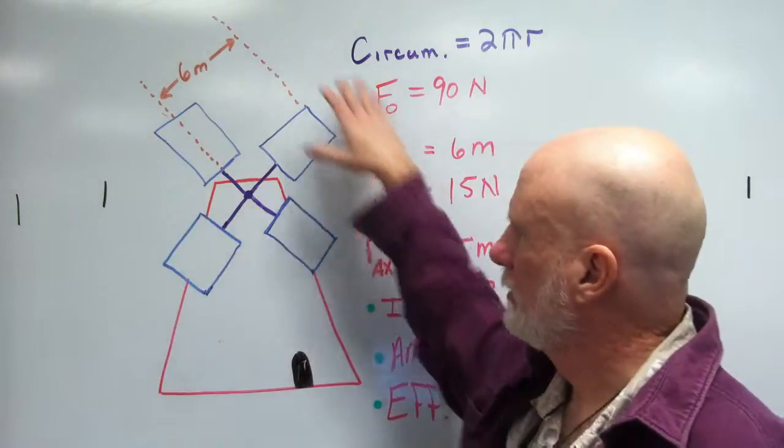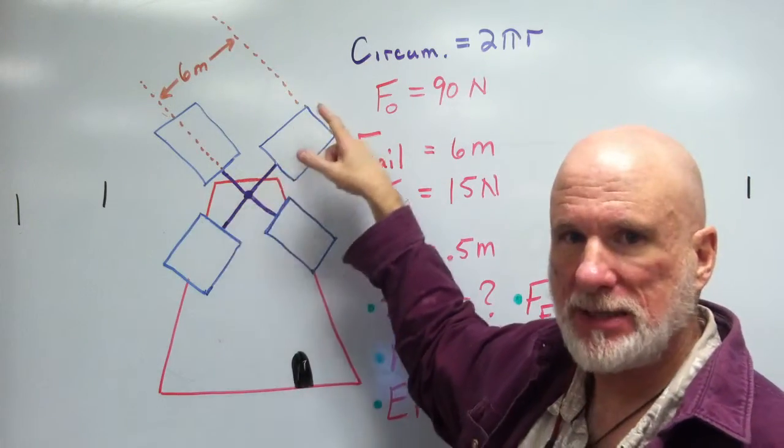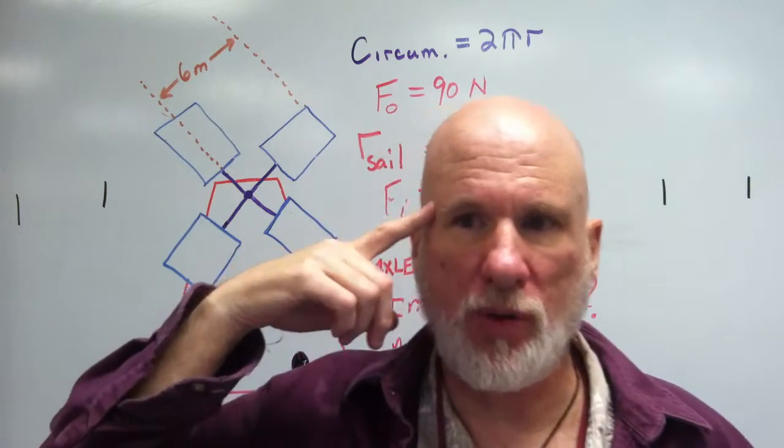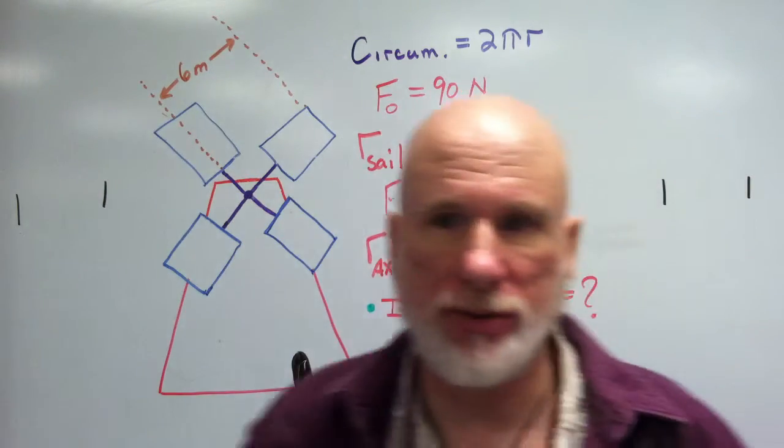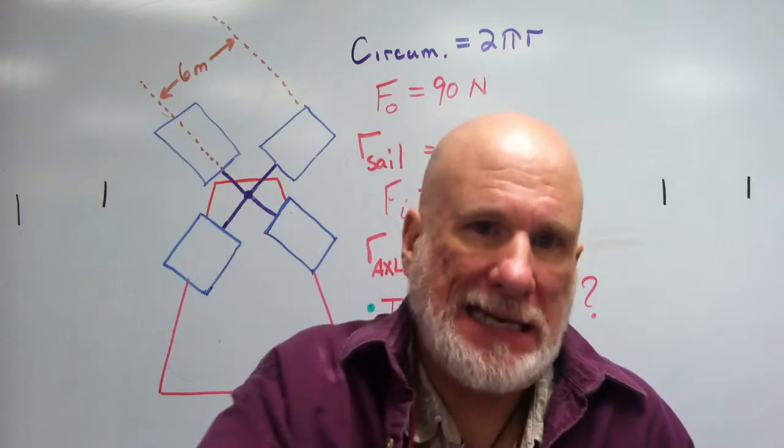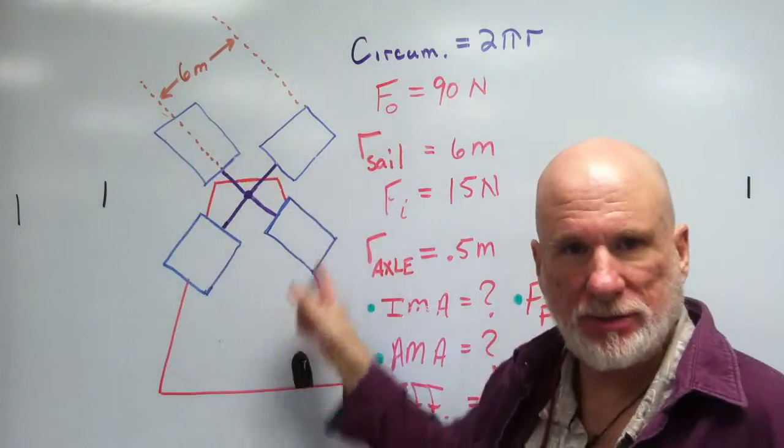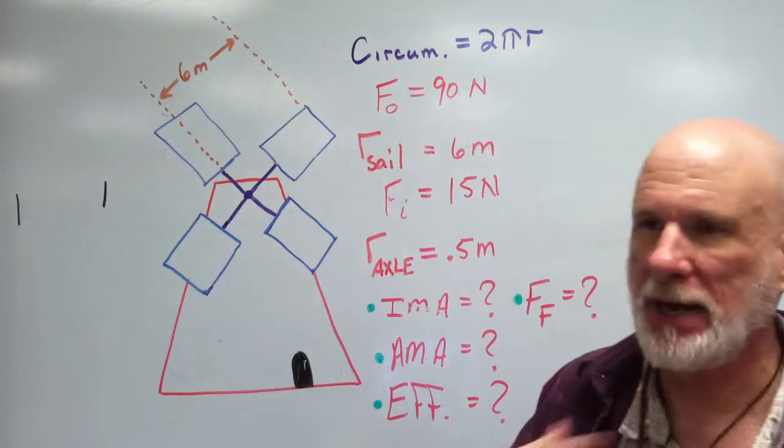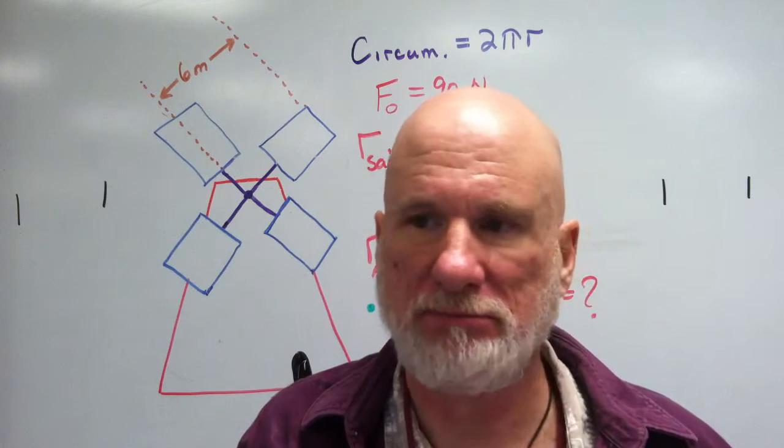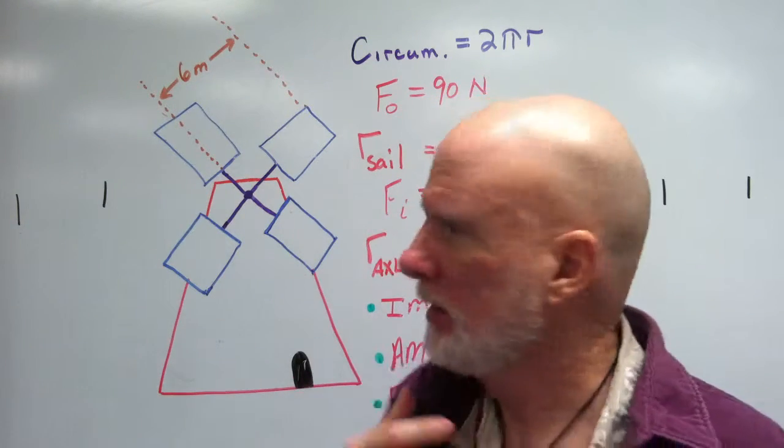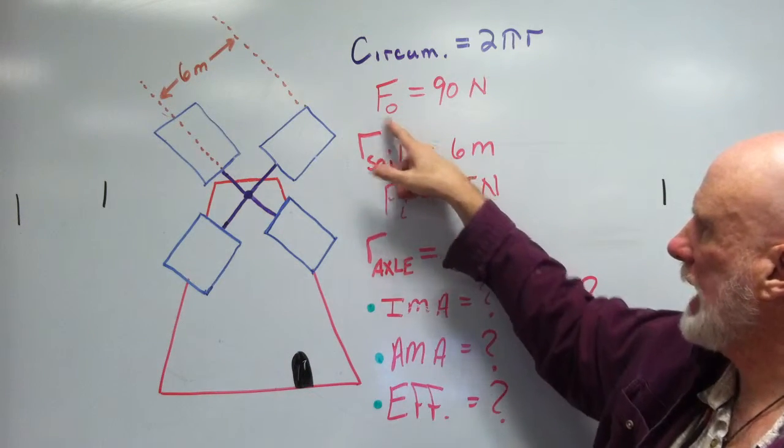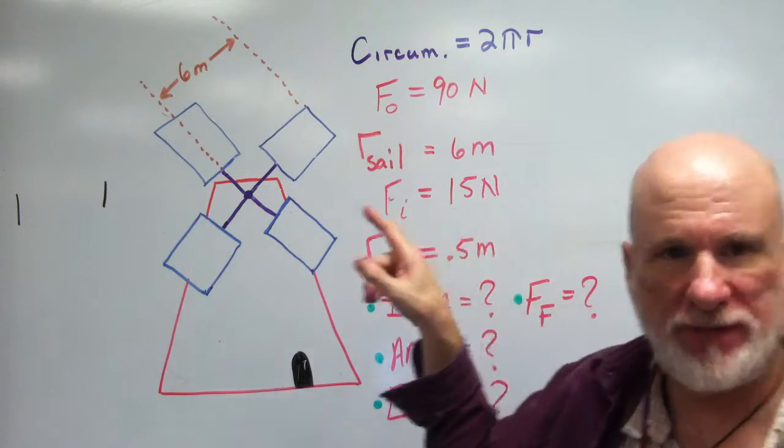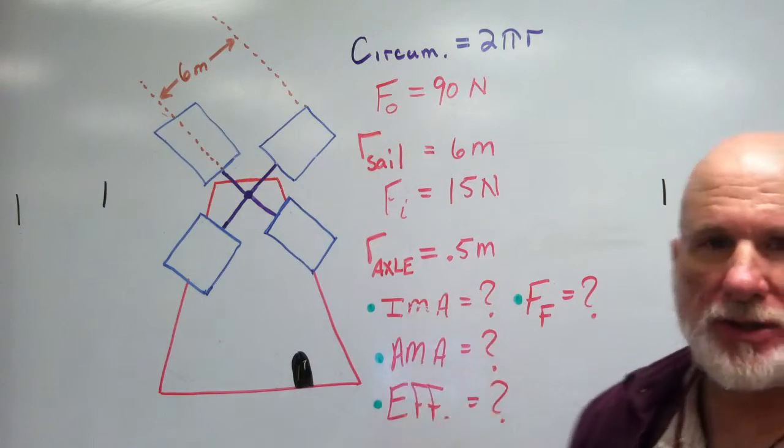I have sails, 6 meter radius, 6 meter radius. The output force is going to be 90 newtons. That's what I'm actually going to do to grind. Grind, 90 newtons. Okay? The input force on the sails, the input force on the sails is only going to be 15 newtons. So, it's pretty good, 15 newtons. It's not bad. Not bad. I'm 1,000 newtons. So, 15 newtons is, it's like 3 pounds. It's nothing. Okay, so, the output force is 90, the radius of the sail is 6 meters, the input force is 15 newtons. The axle is, the radius of the axle is 0.5 meters.